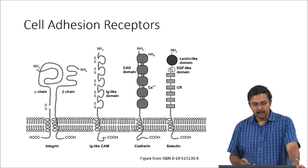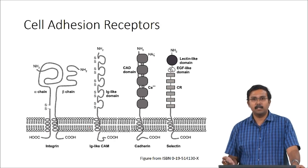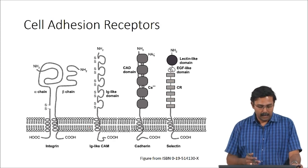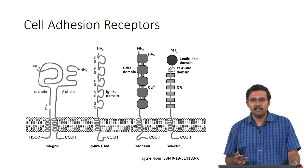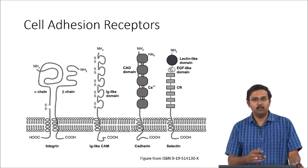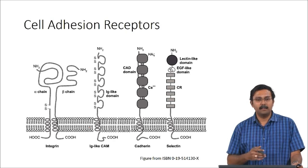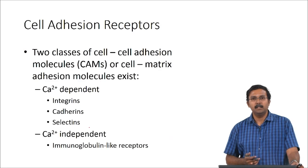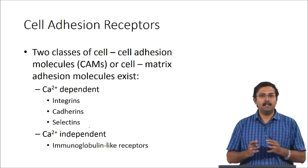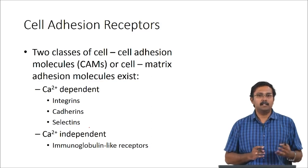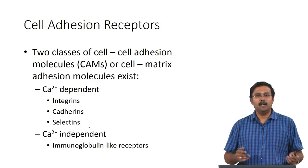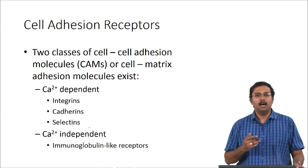The major cell adhesion receptors can be categorized into four major groups: integrins, Ig-like CAMs, cadherins, and selectins. These have different structures and depending on which cell type you are working with, one or more of them can be overexpressed, so you can design your scaffolds appropriately. These four can be grouped as calcium-dependent and calcium-independent receptors. Integrins, cadherins, and selectins are calcium-dependent, whereas immunoglobulin-like receptors (Ig-CAMs) are calcium-independent.